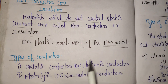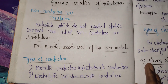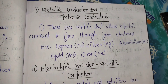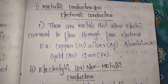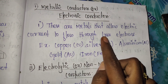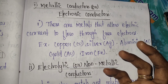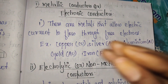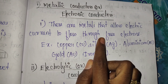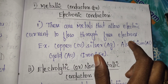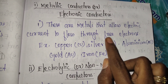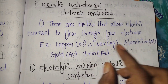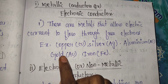Metallic — the name is electronic conductors. Metallic conductors, or electronic conductors, are metals that allow electric current to flow through free electrons. For example: copper, silver, aluminum, gold, iron.